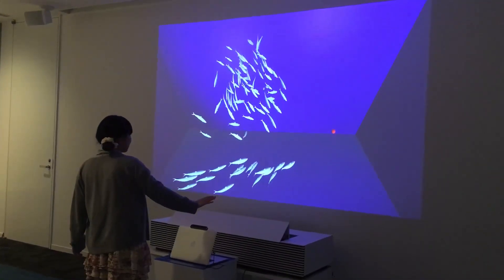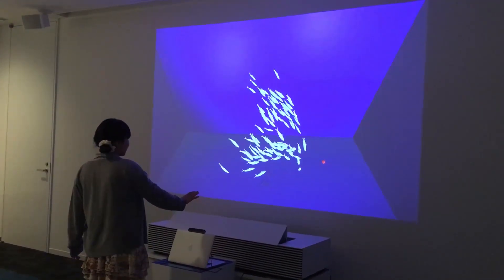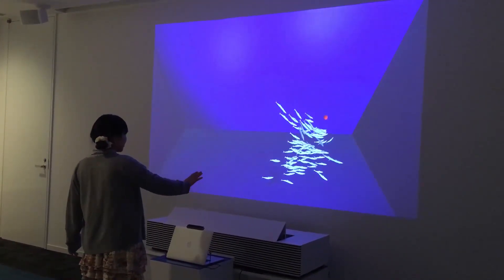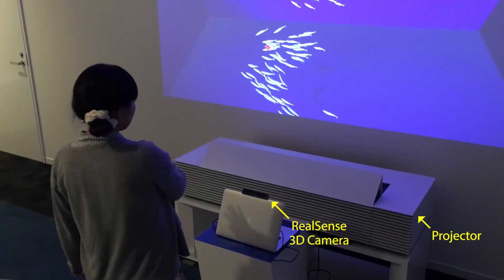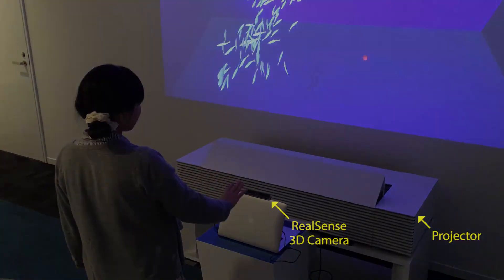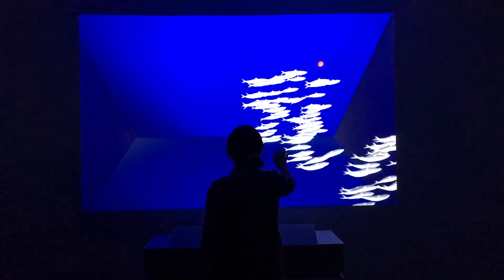This is an example of an interactive application using the Intel RealSense 3D camera. By moving the hand placed over the camera, you can control the position of the school of fish.